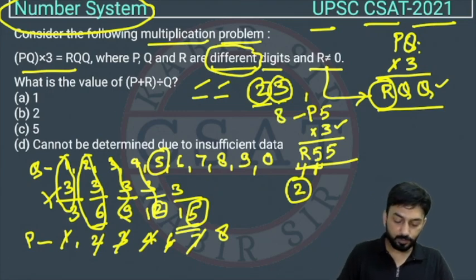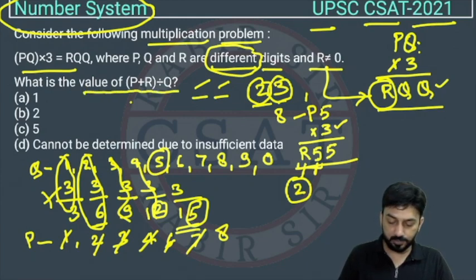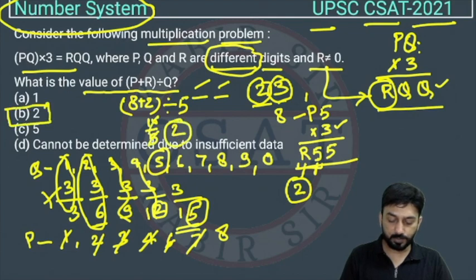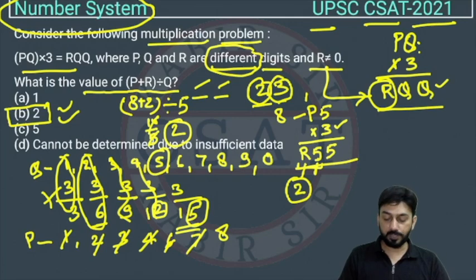We got all values. Now what is the question asking? What is the value of this? So P is what? P is 8 and R is 2, divided by Q. Q is 5. So this is 10 divided by 5. What we will get? We will get 2. So the answer is option B. Option B is the correct answer.